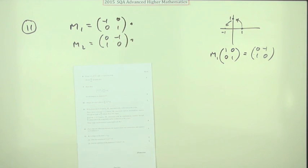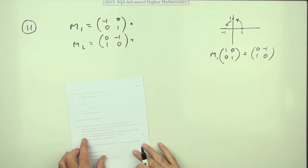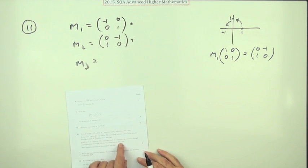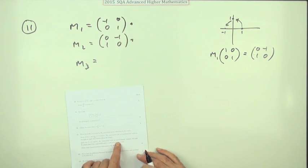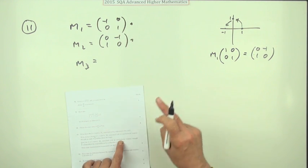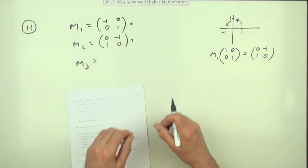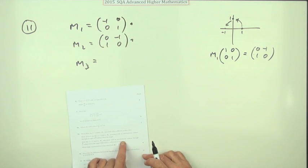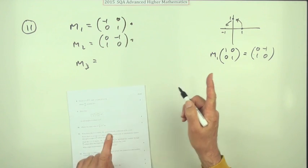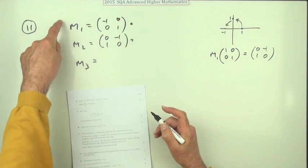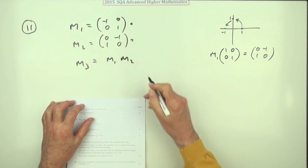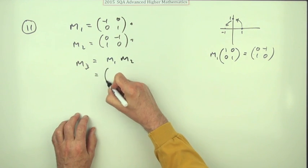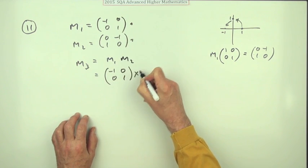Find the matrix m3 associated with a composition of transformations - whichever one comes first goes next to whatever the vector or set of points it's acting on. Associated with an anti-clockwise rotation first followed by a reflection second, so that means it's going to be m1 times m2. This one acting first producing its result, then this one following on.